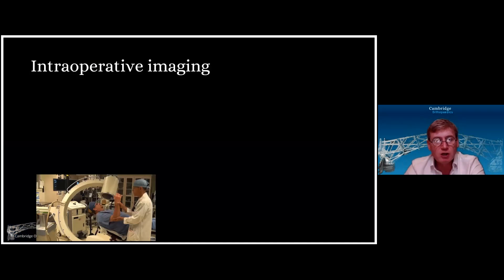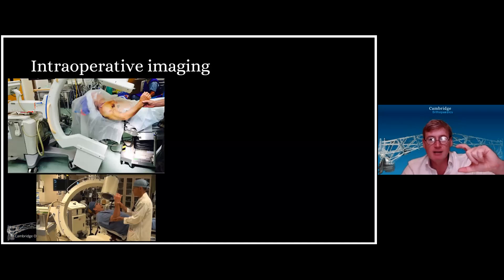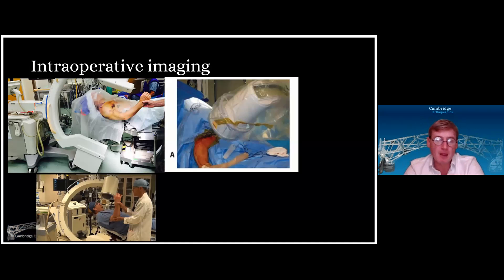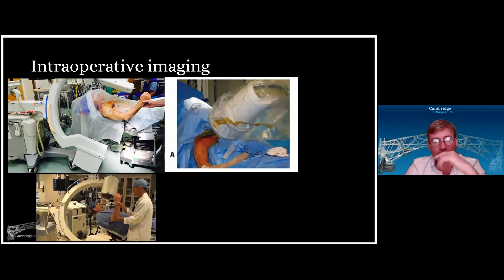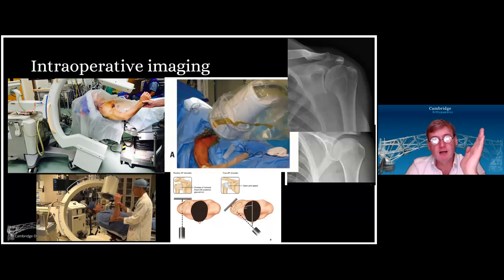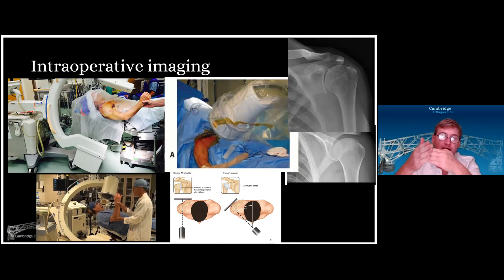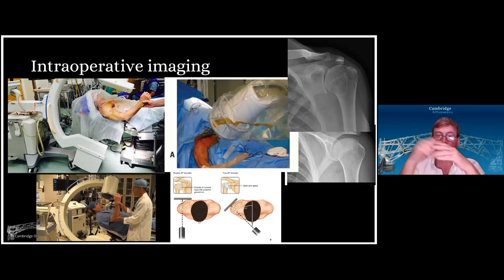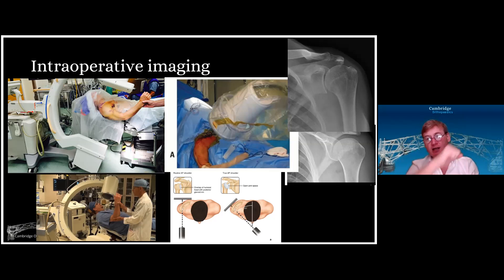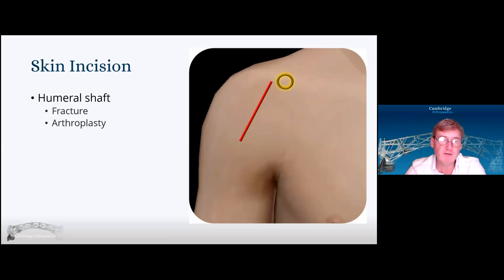As far as intraoperative fluoroscopy goes, there are two options — one coming from the top of the bed and the other coming from the opposite side. I personally prefer the one where it comes from the opposite side. Once you've got your image intensifier in, you need to match it so it's perpendicular to your humeral shaft, then match it to the scapula. Remember that the glenoid sits 90 degrees to the scapula, but the scapula sits 30 degrees to the chest wall. So you need to angle the image intensifier back about 30 degrees to get a tangential view of your glenohumeral joint.